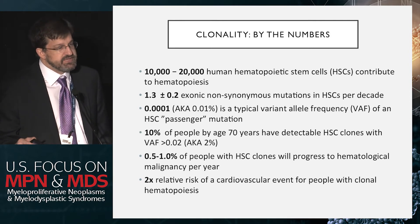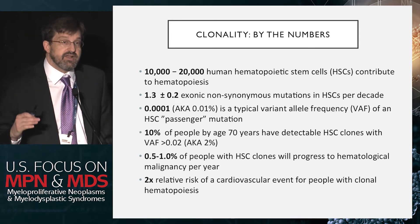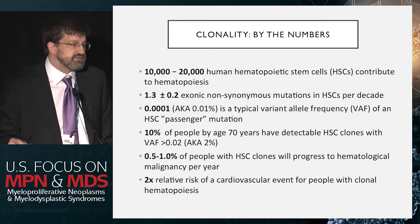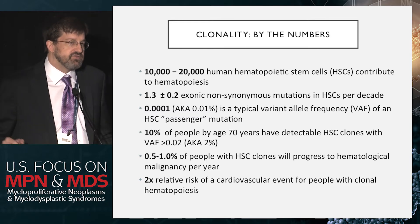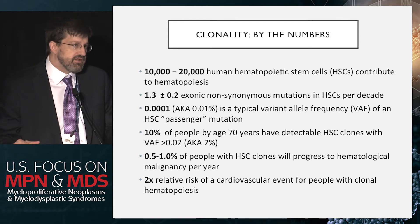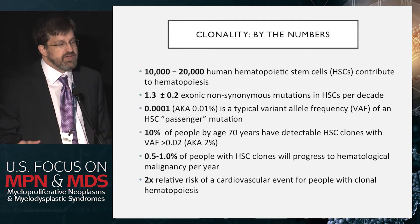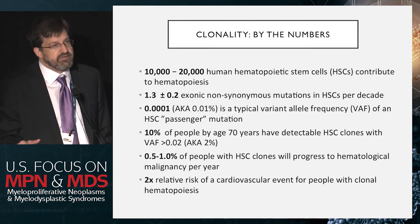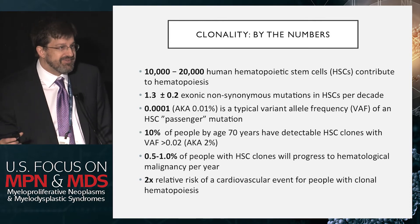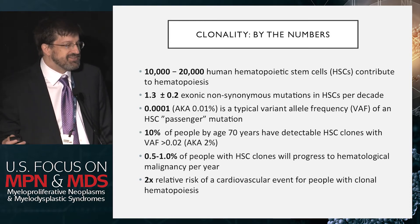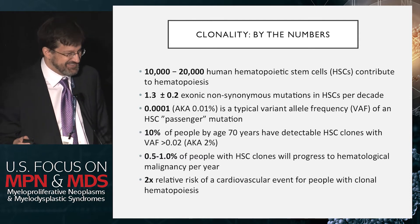By age 70, 10% of the population have detectable hematopoietic stem cell clones at least at the 2% variant allele frequency level. If you use very targeted resequencing with error correction, you can find that almost everybody has a clonal mutation. Almost everyone in this room is over 35 to 40, so almost all of us have a mutation in our hematopoietic stem cells — which is actually a scary thought.